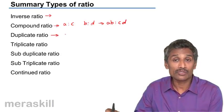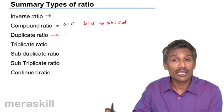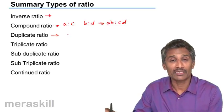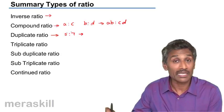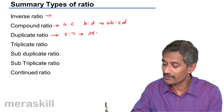Duplicate ratio is a square ratio. So suppose the ratio is a is to b, its duplicate ratio is a square to b square. For example, if you have 5 is to 7, its duplicate ratio is 5 square, 25 is to 49.